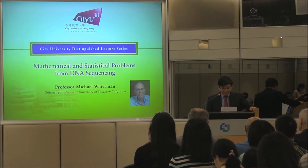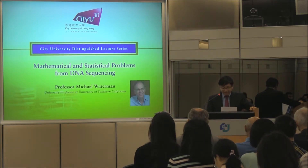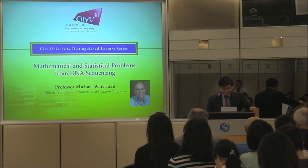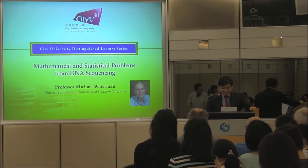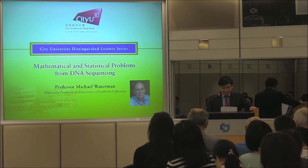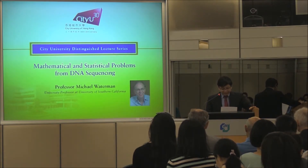Professor Wartman came to the University of Southern California in 1982 after positions at Los Alamos National Laboratory and Idaho State University. He has a bachelor's degree in mathematics from Oregon State University and a PhD in statistics and probability from Michigan State University. He has held visiting positions at the University of Hawaii, University of California at San Francisco, and the University of California Medical School.